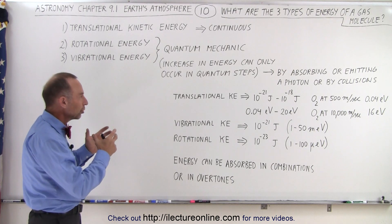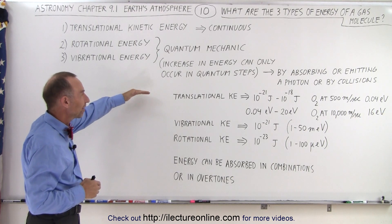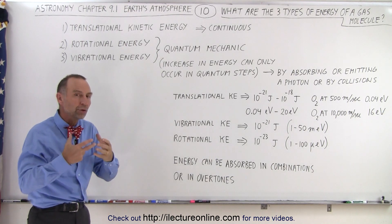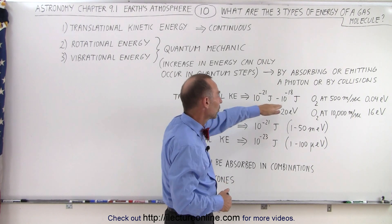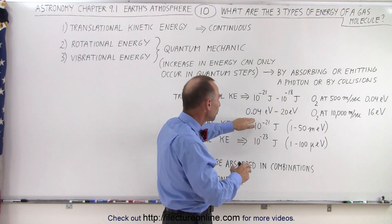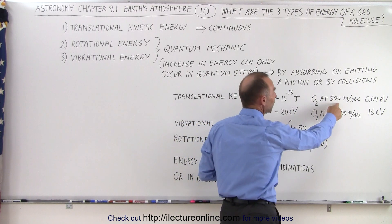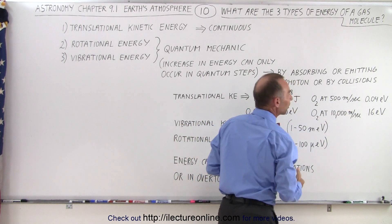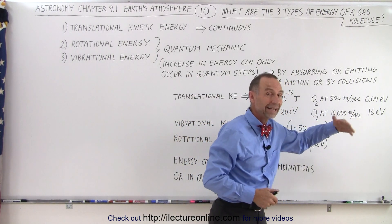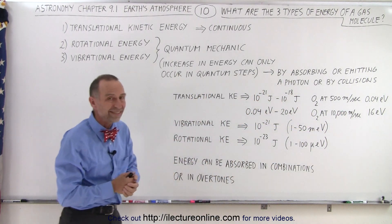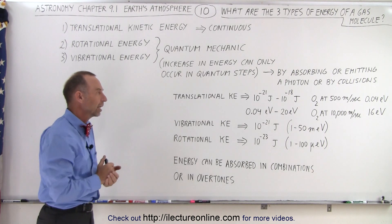Now the amount of energy that a gas molecule can have due to those three different modes varies quite a bit. It turns out that translational kinetic energy is the way in which a molecule can have the most energy. The amount of energy it can have varies anywhere from 10^-21 joules to 10^-18 joules, which is roughly about 0.04 electron volts to about 20 electron volts. Now for an oxygen molecule at 500 meters per second, the amount of kinetic energy it has is about 0.04 electron volts. But if the molecule can speed up and move at 10,000 meters per second, it now has a translational kinetic energy of 16 electron volts. So the ability to have a lot of energy definitely is enhanced by the translational kinetic energy.